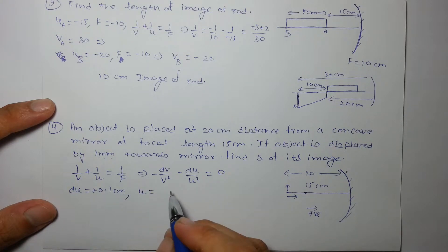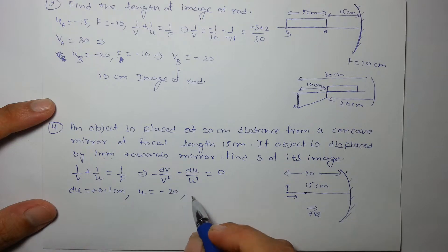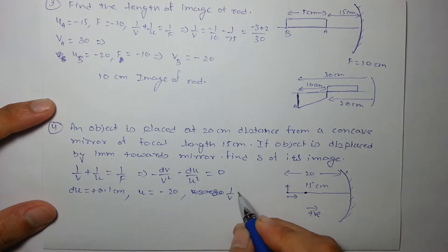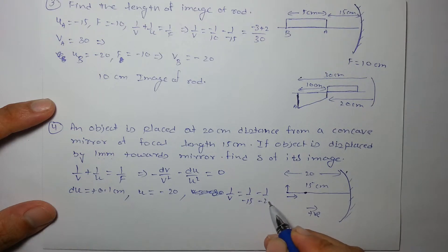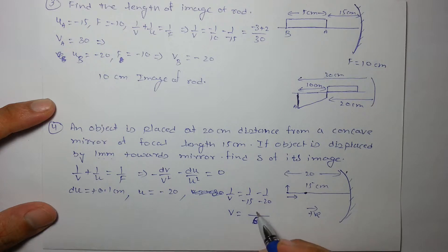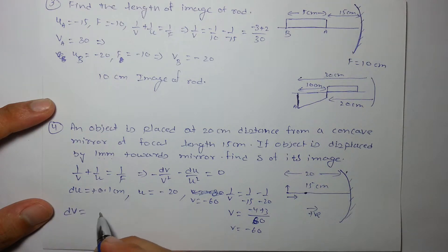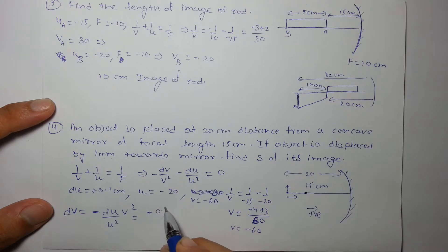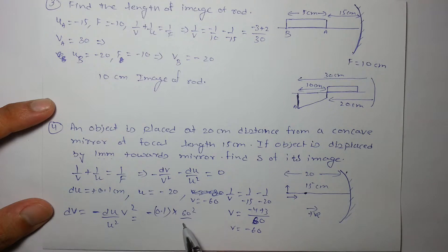And from the expression we can always calculate v using u. As we know u is -20, we will get v. Let's solve for v: 1/v = 1/f which is -1/15 - (-1/20), so we will get v equal to, that will be -4+3, so v comes out to be minus 60. So v is minus 60 and we have to calculate dv. So using this expression, dv = -du × v²/u².